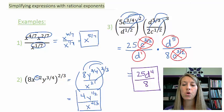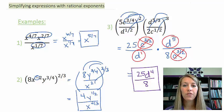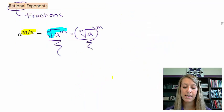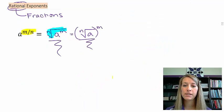We're finished with rational exponents. We see why it's in the radical section — that's how we convert back and forth and how we simplify along the way.